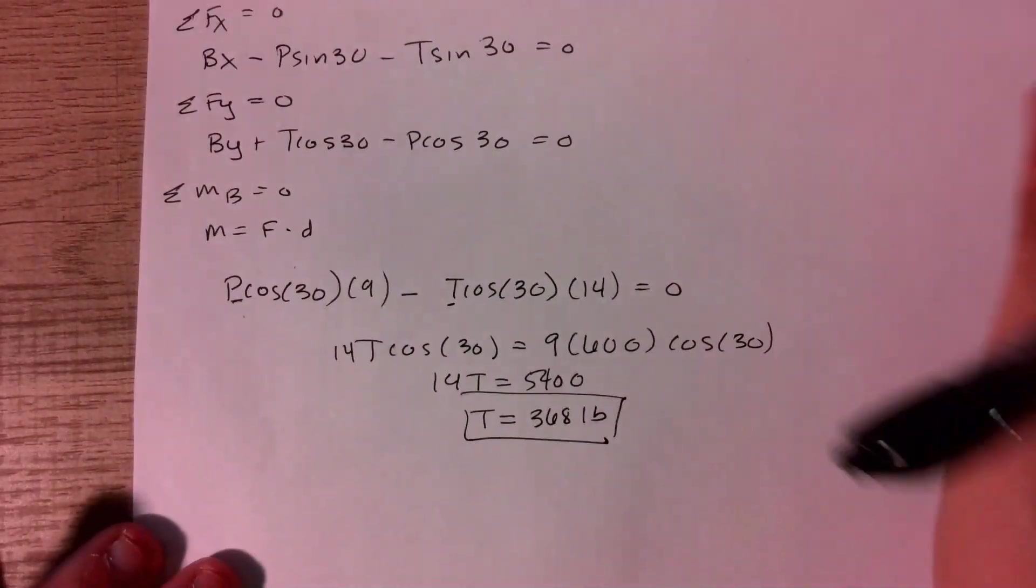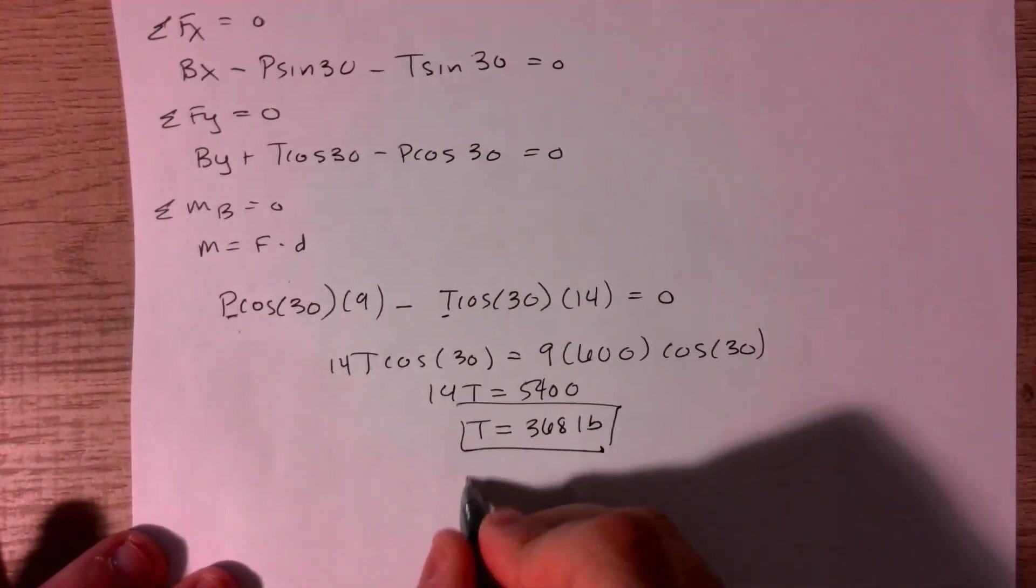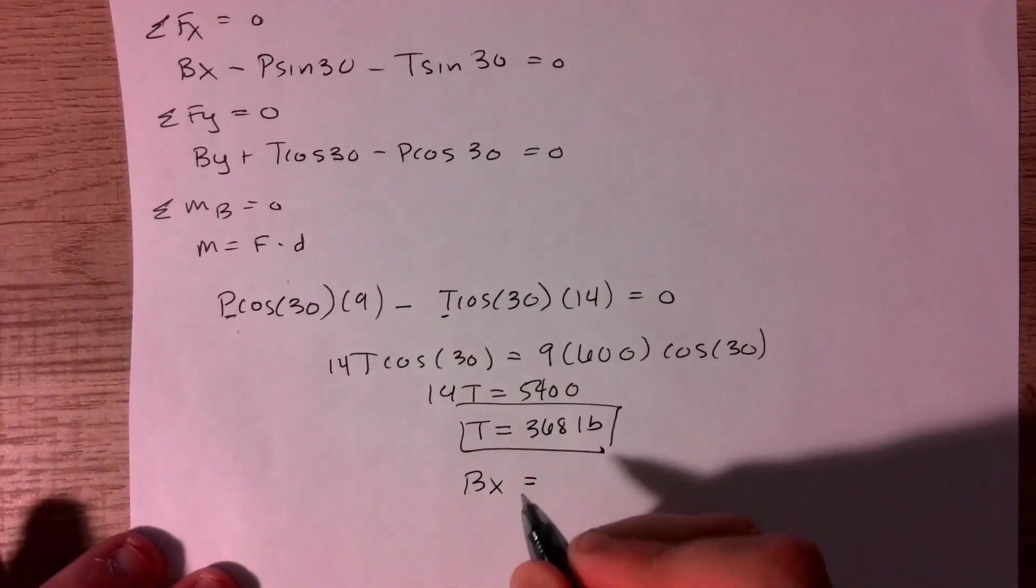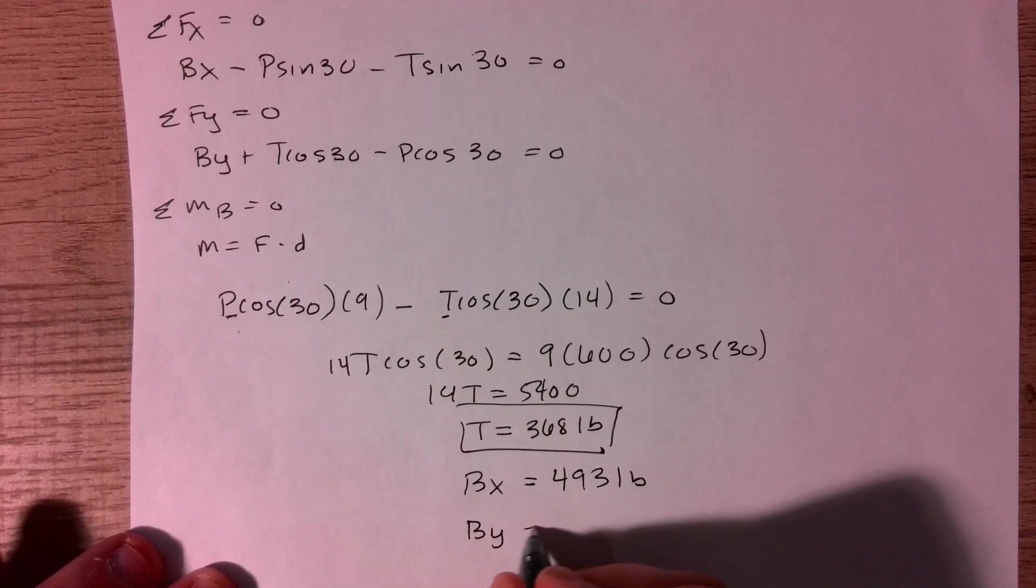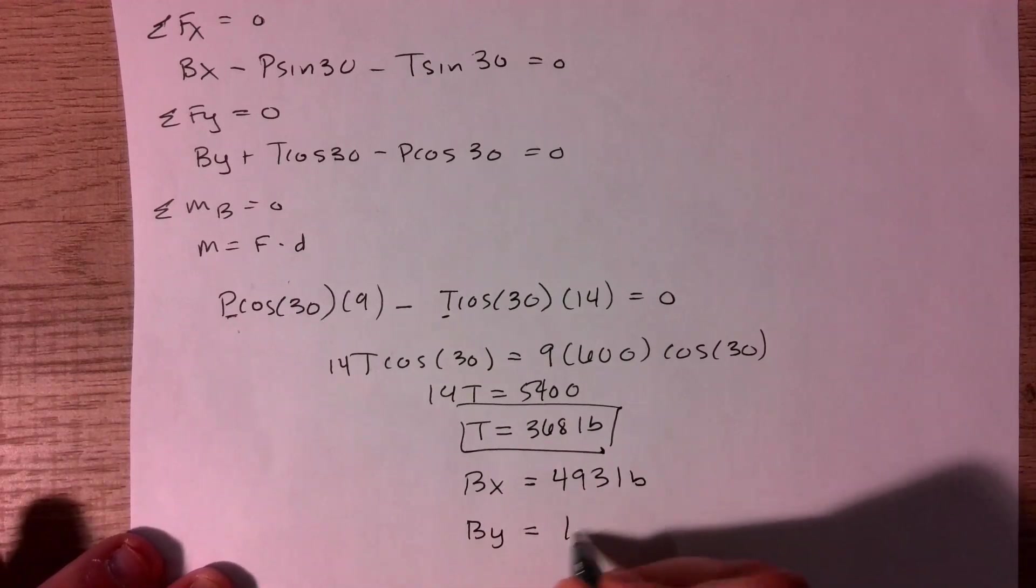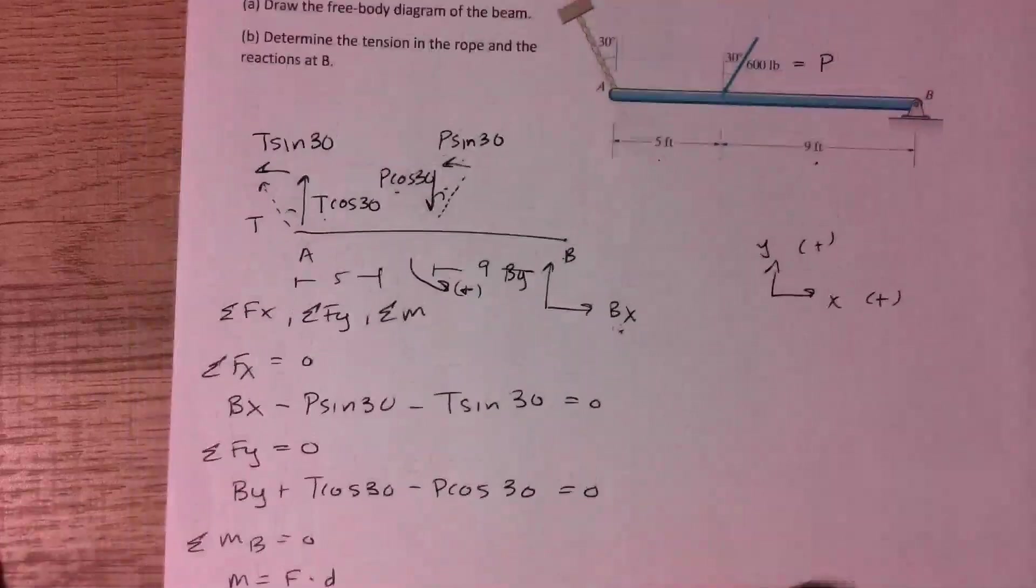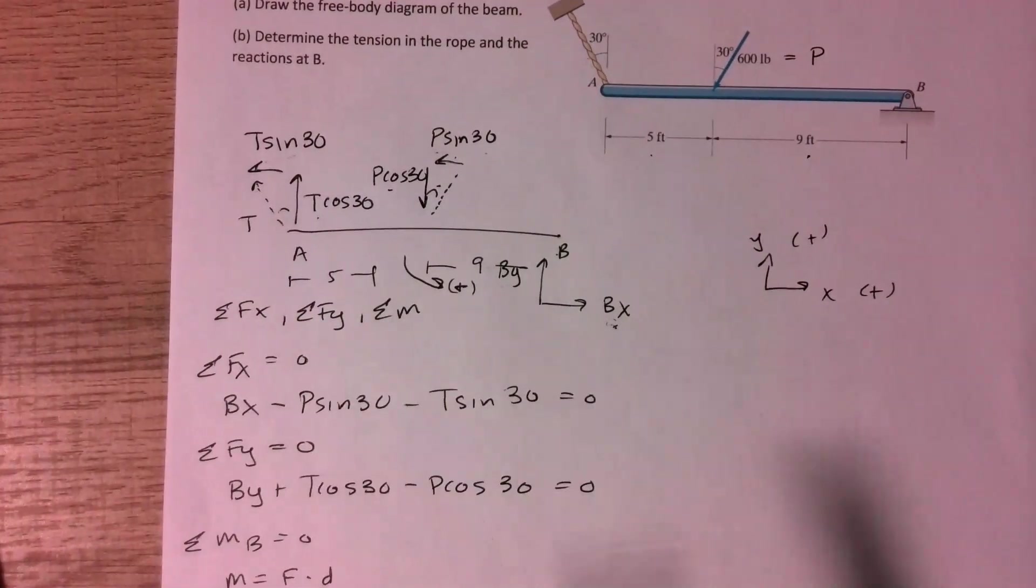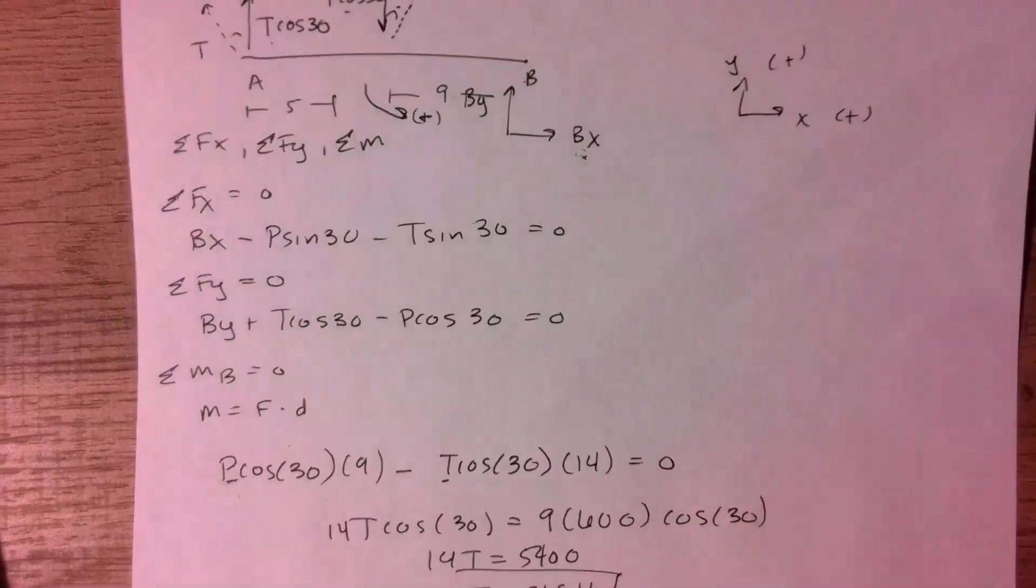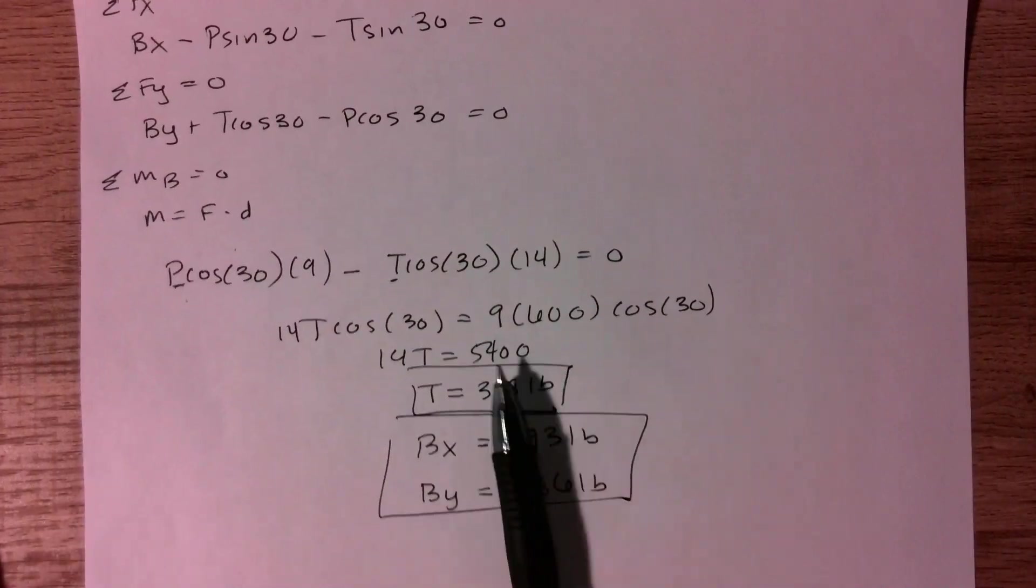And then we can plug that value in for this other two equations up here. And then we get that Bx is equal to 493 pounds. And that By is equal to 186 pounds. So there you go. Again, we draw a free body diagram, sum of forces in x, y, and the moments. And then we're able to solve that system of equations to get the values of the tension and the reaction in the end.